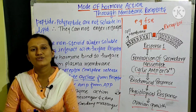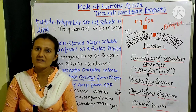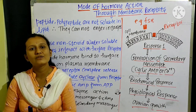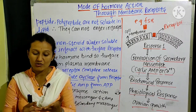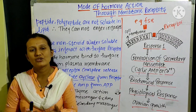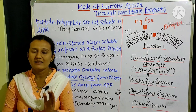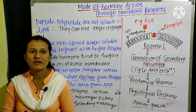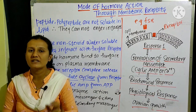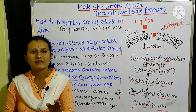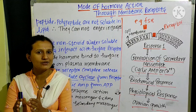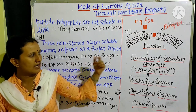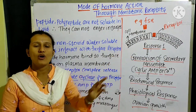We know that there are two types of hormones: some are lipid-soluble and some are water-soluble. Hormones like corticoids, from the cortex of the adrenal gland, are lipid-soluble. Hormones like catecholamines, peptides, and polypeptides — which are small chains of amino acids — are not lipid-soluble. Since our plasma membrane is made of lipids, water-soluble hormones cannot pass through the membrane; they can only interact with the surface of the membrane.